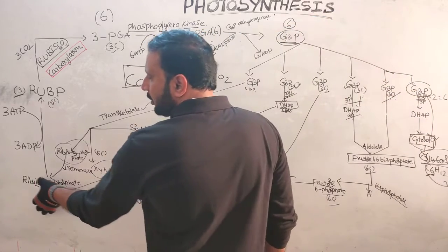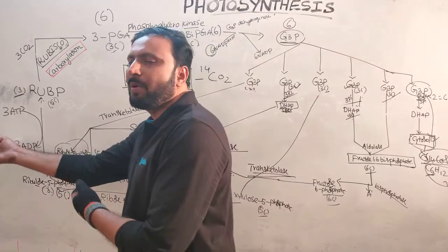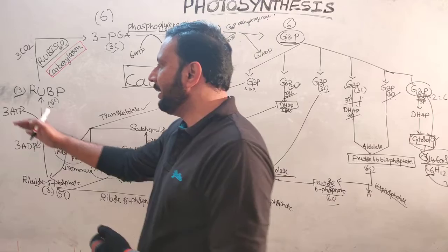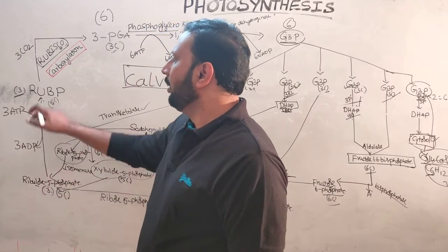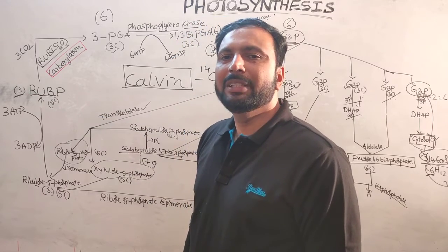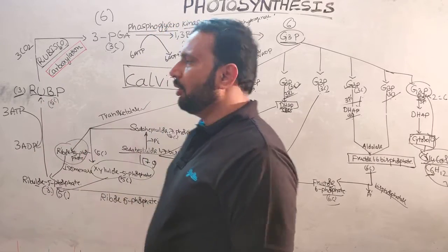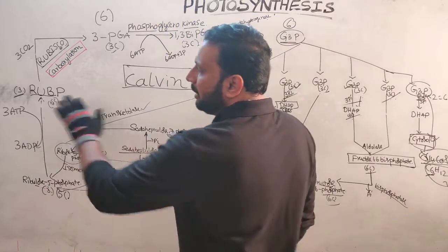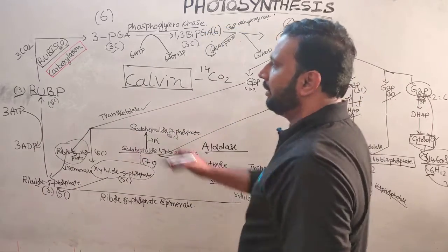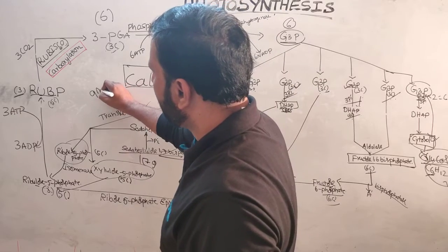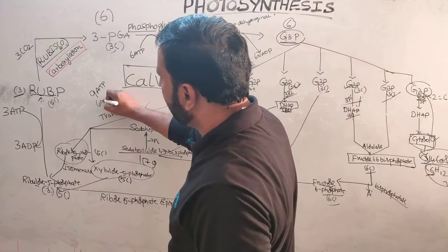The three molecules of ribulose-5-phosphate undergo phosphorylation — adding a phosphate using three ATPs — and are converted into ribulose-1,5-bisphosphate (RuBP), regenerating RuBP. For regeneration, three ATPs are needed here, and six ATPs were needed in the earlier phosphorylation step, giving nine ATPs total. Six NADPH2s are required in total.